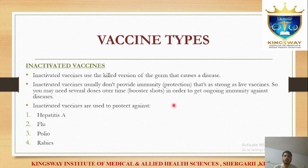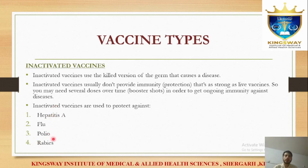Which vaccines are inactivated? Hepatitis A, flu, polio, and rabies. These are inactivated vaccines. The hepatitis A virus, flu virus, polio virus, and rabies virus are killed to make these vaccines. The killed virus cannot harm the human body but still stimulates an immune response.